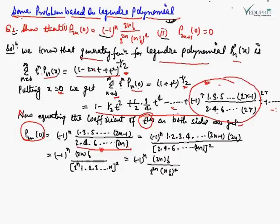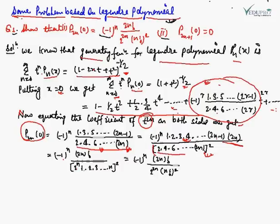To simplify, we multiply numerator and denominator appropriately. The numerator becomes (−1)ⁿ · 1·2·3·4···(2n−1)·2n, which is (2n)!. In the denominator, from 2·4·6···2n, we take out a factor of 2 from each term, giving 2ⁿ, with the remaining product being 1·2·3···n, which is n!.